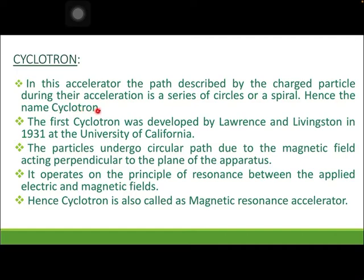In the linear accelerator, the path described by the particle is a straight line, and therefore it has to go through acceleration many times, making the size of the apparatus very large. To overcome that difficulty, scientists developed this kind of accelerator where the path described by the charged particle is a series of circles or a spiral, which reduces the size of the apparatus.